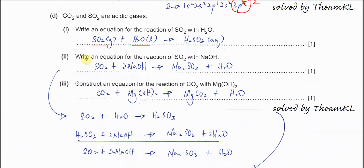Part D(ii): Write an equation for the reaction of SO2 with NaOH. If you have difficulty constructing the equation, use this method: SO2 first reacts with water to form sulfurous acid H2SO3, and the sulfurous acid produced then reacts with sodium hydroxide to form sodium sulfite and water.